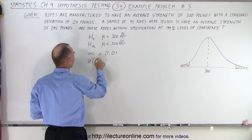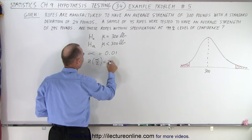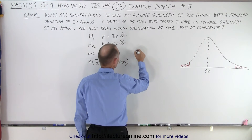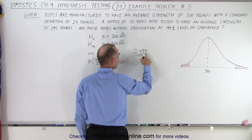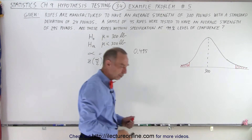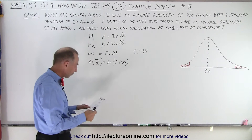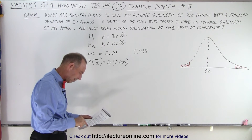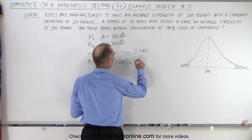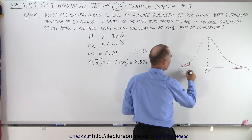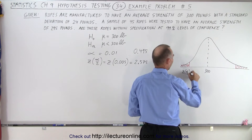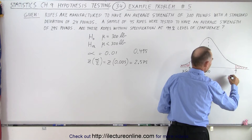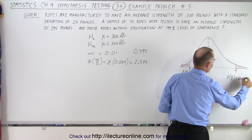We want to get the z-score for half of that because it's a two-tail problem. So we want the z-score of 0.005 — half a percent. On the table we're going to look for 0.495, because a half percent more brings it up to 0.5, and see what the equivalent z-score is. We find 0.495 on the table, which is in between 2.57 and 2.58, so let's call it 2.575. On the lower limit we have minus 2.575, and on the upper limit, plus 2.575.